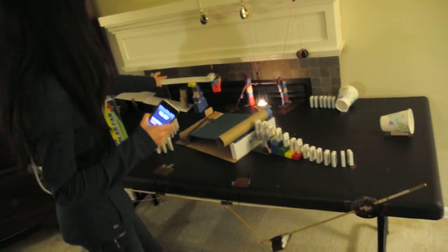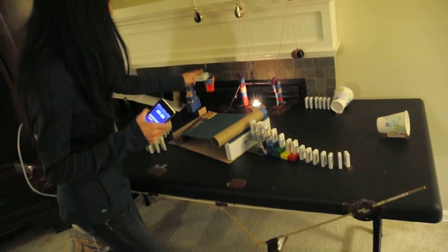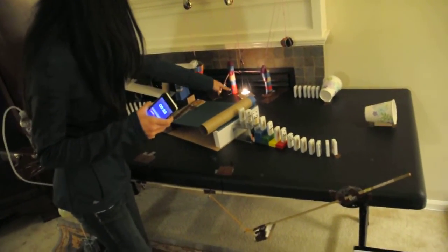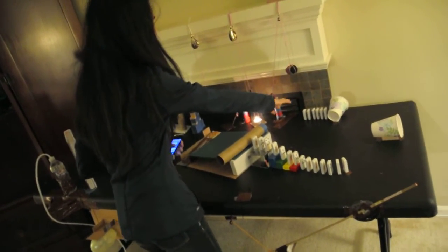It will hit this lever which will allow the weights to fall in the basket. The candle will then burn the string and the ball will fall onto the dominoes.